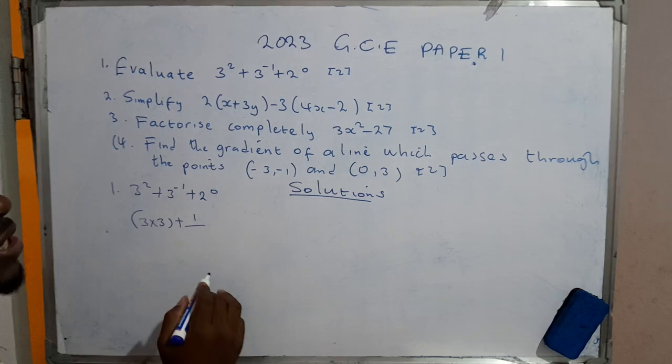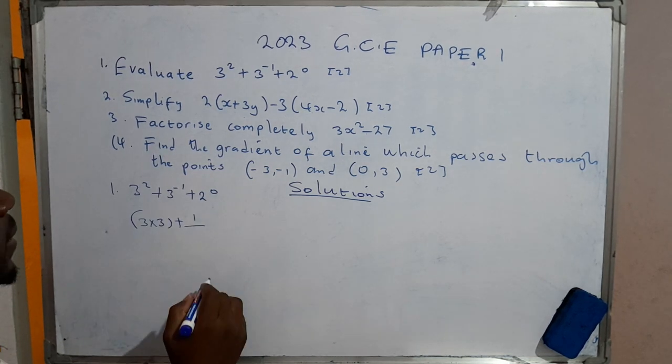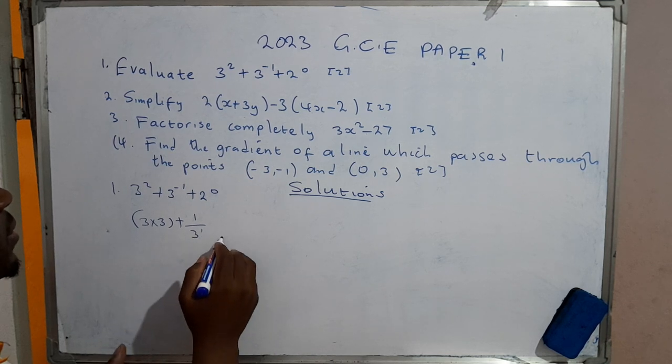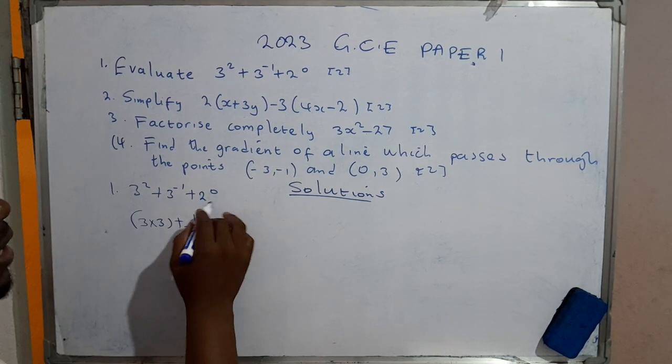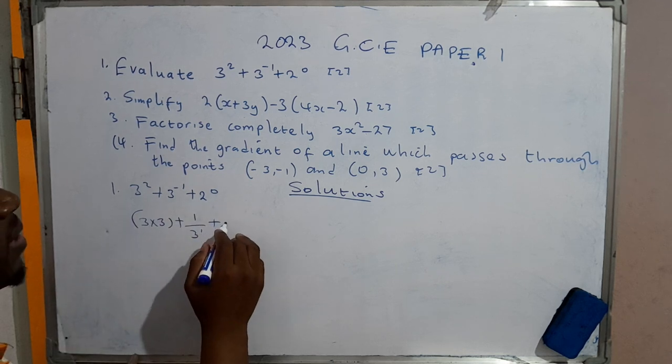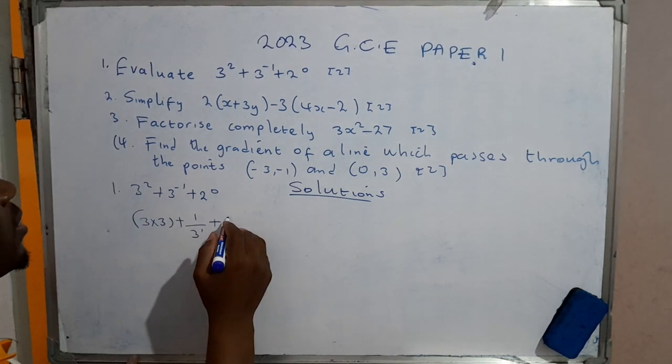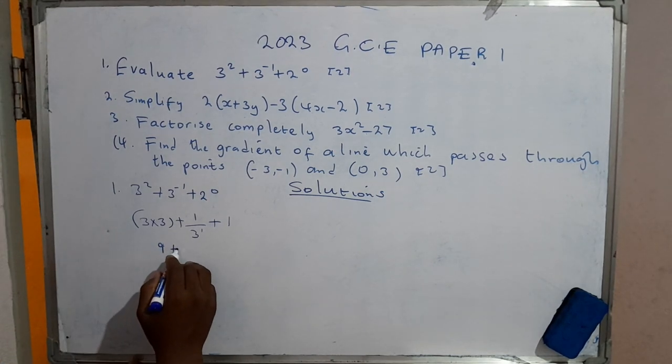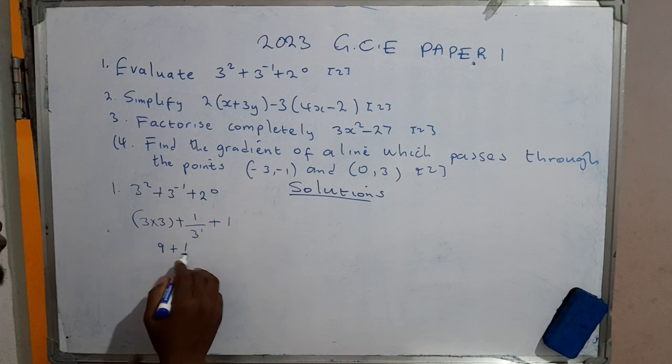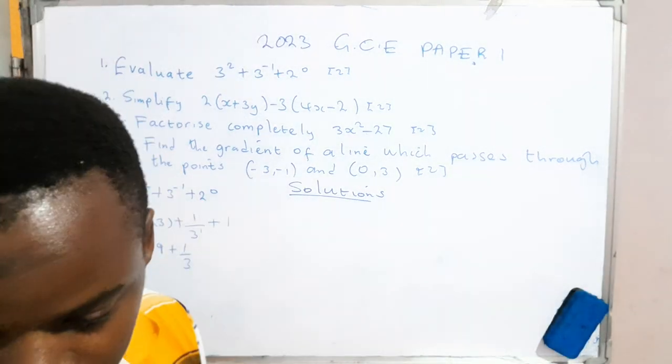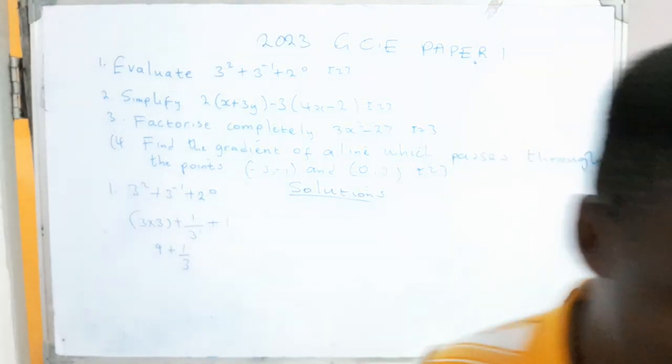This one here would be 3 × 3 when expanded, plus this one has to be changed into a term with the positive power, so that is 3 raised to the power +1. We apply the law of indices - any number raised to the power zero is 1, so we have 1. 3 × 3 gives us 9, plus this one is as good as 1 over 3.